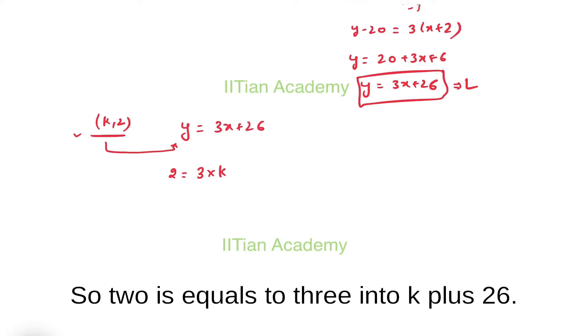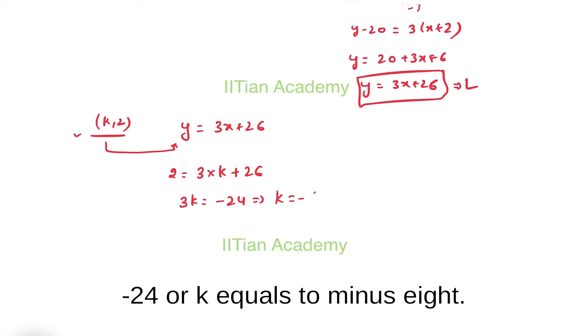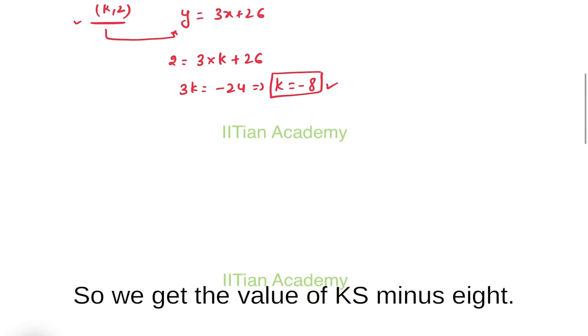So 2 = 3k + 26, which gives us 3k = -24, or k = -8. We get the value of k as minus 8.